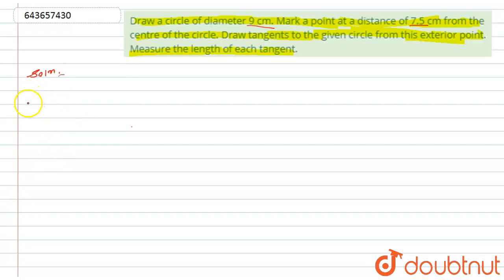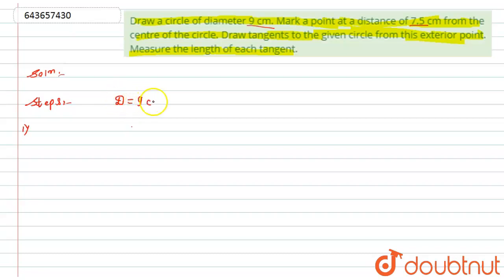To construct this, let's go through the construction steps. Step one: calculate the radius of the circle. The diameter is given as 9 centimeters, so the radius r equals d divided by 2, that is 9 by 2, which equals 4.5 centimeters.